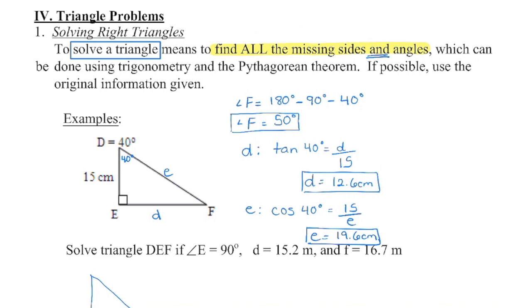Take a look at the first example — we have a diagram. You always need two pieces of information in order to solve for remaining angles or sides. In the first diagram, we know that this angle is 40 degrees, and we also know that the height of the triangle is 15 centimeters. So we know two of the angles, and we need two pieces of information as well as this 90 degrees.